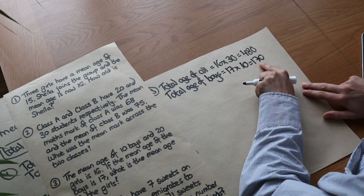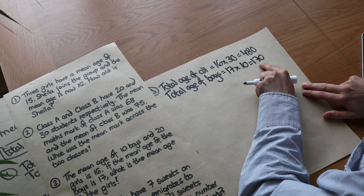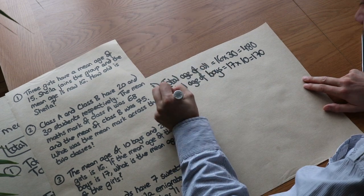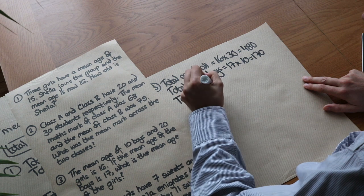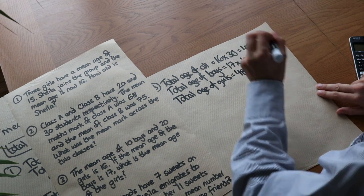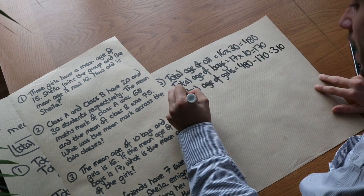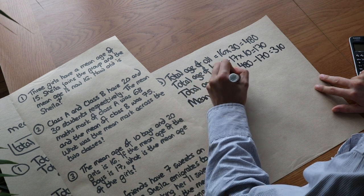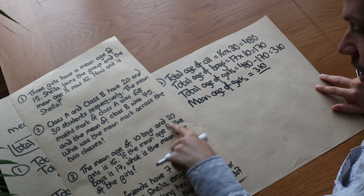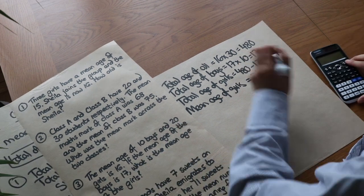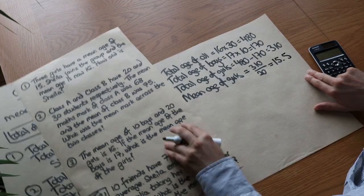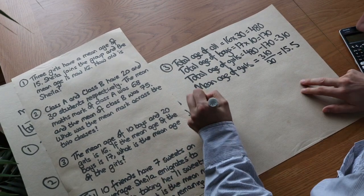We can also find the total age of the boys: 17 (their mean) times 10 (the number of boys) equals 170. The total age of the girls is the difference: 480 minus 170 equals 310. Therefore the mean age of the girls is the total age of the girls (310) divided by the number of girls (20), which gives 15.5.